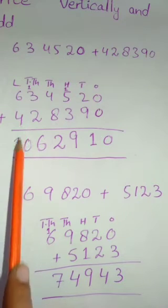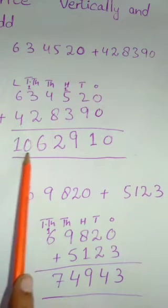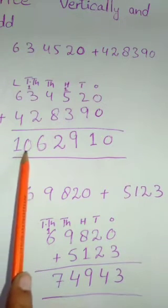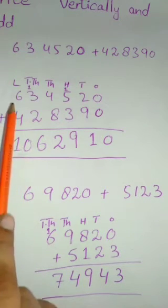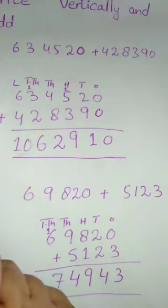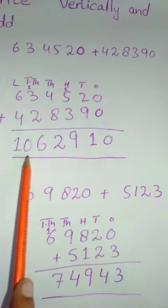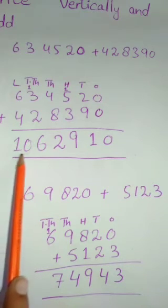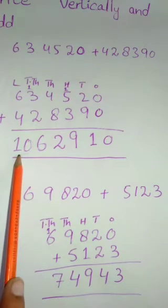Six and four makes ten — you will write the whole number here because no number remains to which we can give a carry, so you write the whole number at the last position.